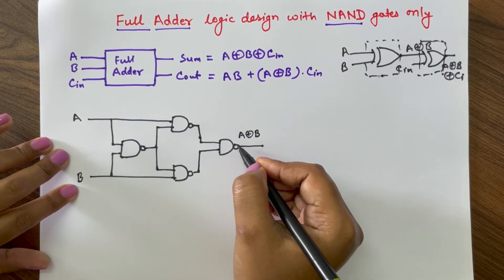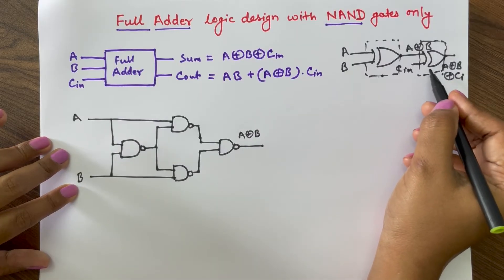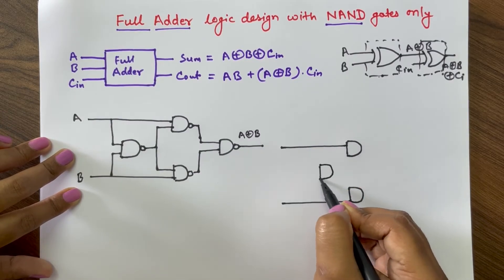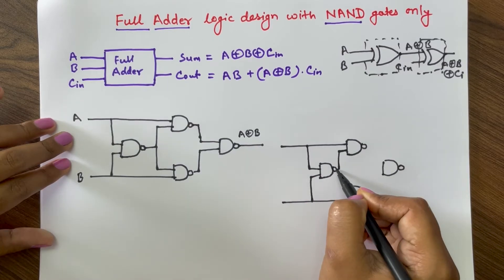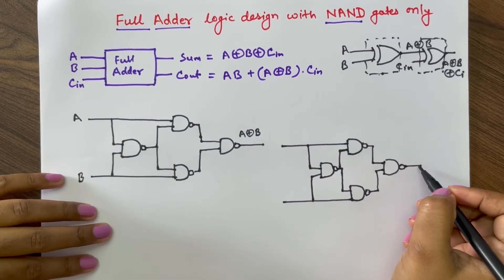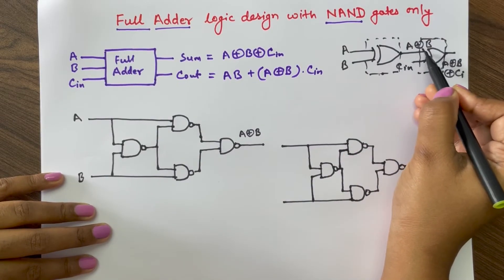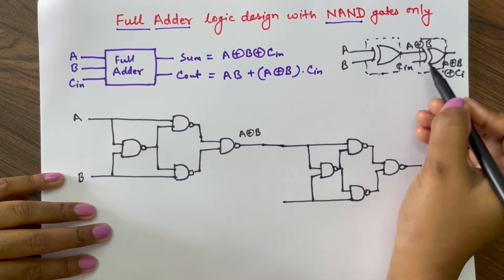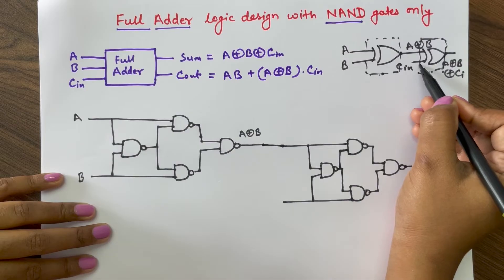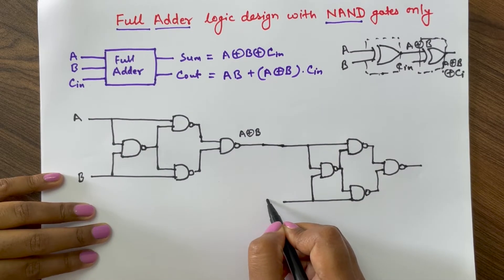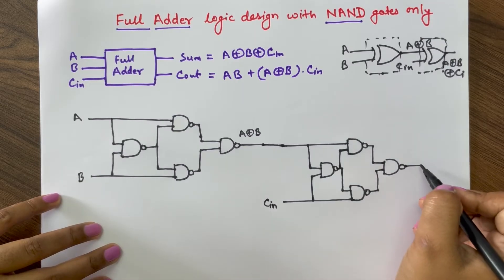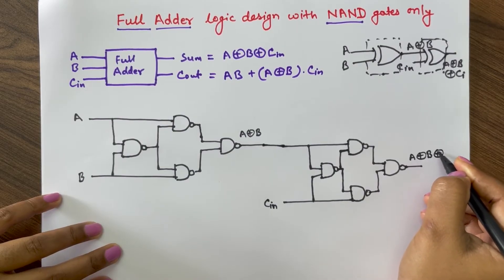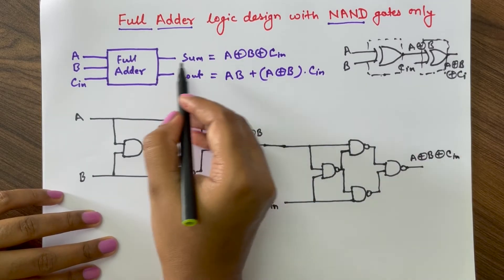This is the first XOR gate. Similarly we design the second XOR gate. The output A XOR B from the first XOR gate is given as one input to the second XOR gate, and the second input is C_in. The output of the second XOR gate is A XOR B XOR C_in, which is the sum for the full adder.